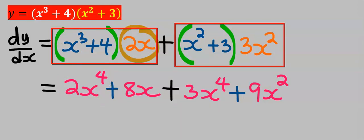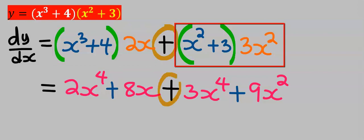Next, 2x multiply by 4, you are going to get 8x. Next, remember the plus.